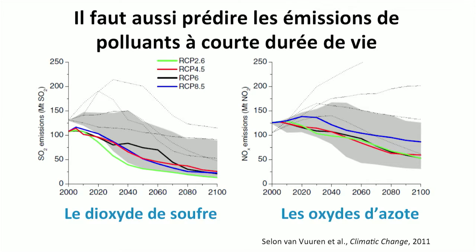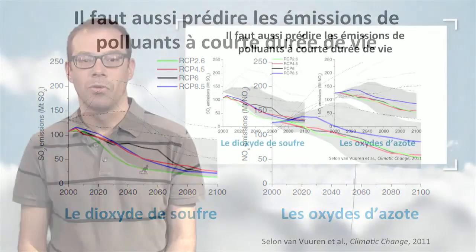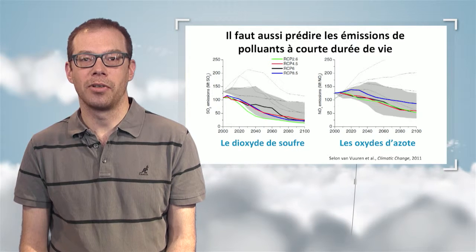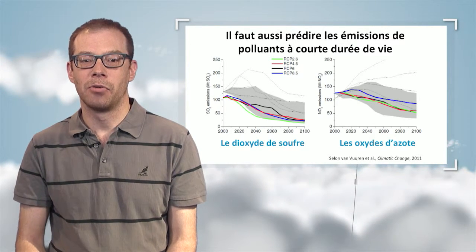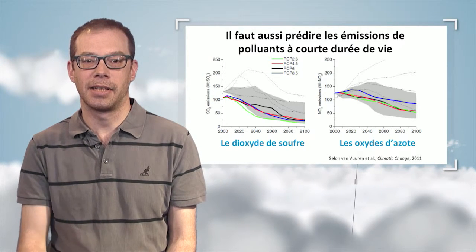Greenhouse gases are not the only factors influencing the climate. There are also short life cycle pollutants with a climate impact, such as sulfur dioxide, which is responsible for negative radiative forcing because it forms sulfur aerosols that cool the climate, and nitrogen oxides, which combined with volatile organic compounds form ozone and other greenhouse gases. These short life cycle pollutants also affect air quality. Generally, their emissions or concentrations will decrease during the 21st century at a rate depending on assumptions about economic growth and convergence between developing and developed countries.